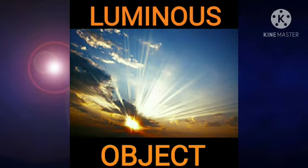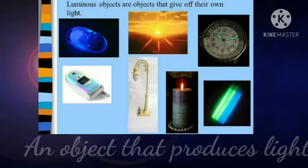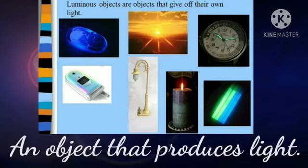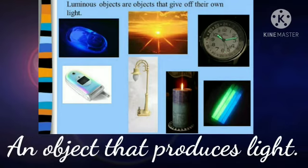Our first term is luminous object. L-U-M-I-N-O-U-S luminous. O-B-J-E-C-T object. Luminous object. An object that produces light is called luminous object. Luminous object can be natural or man-made.